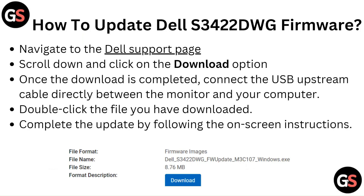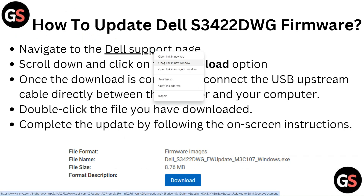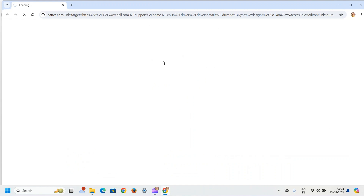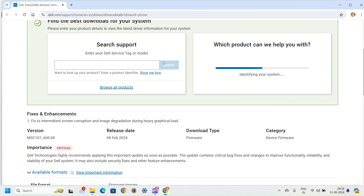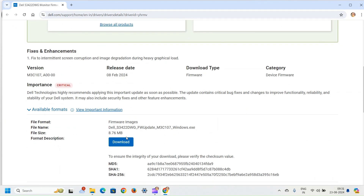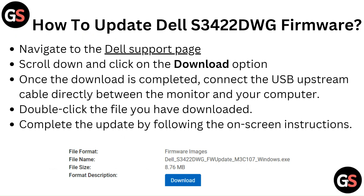How to update Dell S3422DWG firmware: Navigate to the Dell support page and scroll down to click on the download option. Once the download is completed, connect the USB upstream cable directly between the monitor and your computer. Double-click the file you have downloaded and complete the update by following the on-screen instructions.